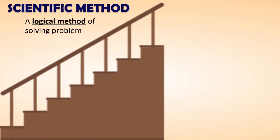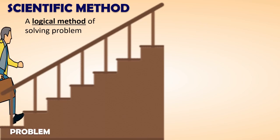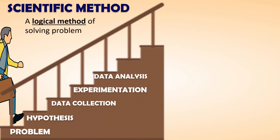Scientific method is a logical method of solving problem. Here are the different components or steps in scientific method. First is the identification of the problem. Next, formulation of hypothesis, data collection, experimentation, data analysis, and conclusion.